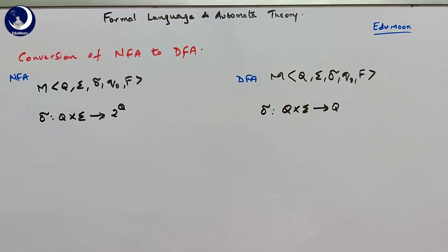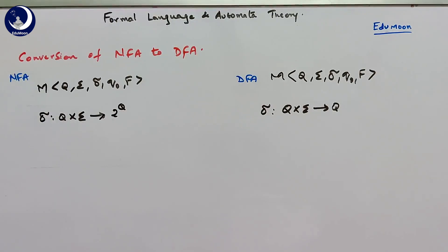In NFA, when you read a symbol from any state, it can go to any number of possible states — almost equal to 2 power Q. In DFA, we can clearly determine what is the next state, which is why it is written as Q cross sigma goes to Q.